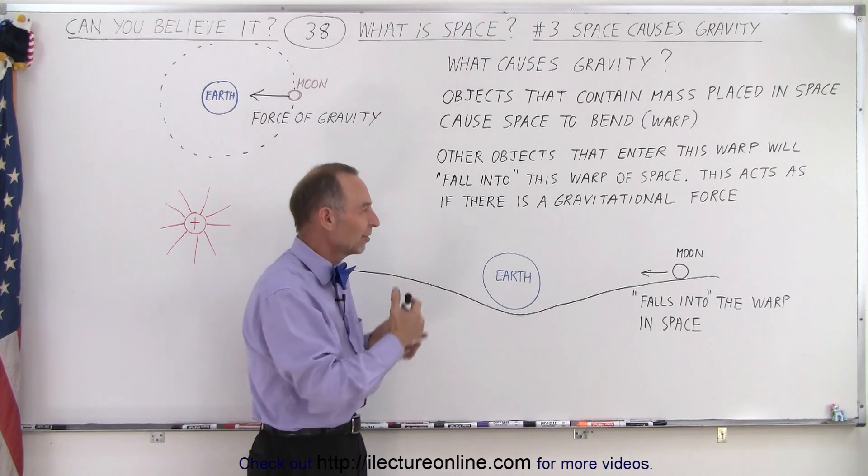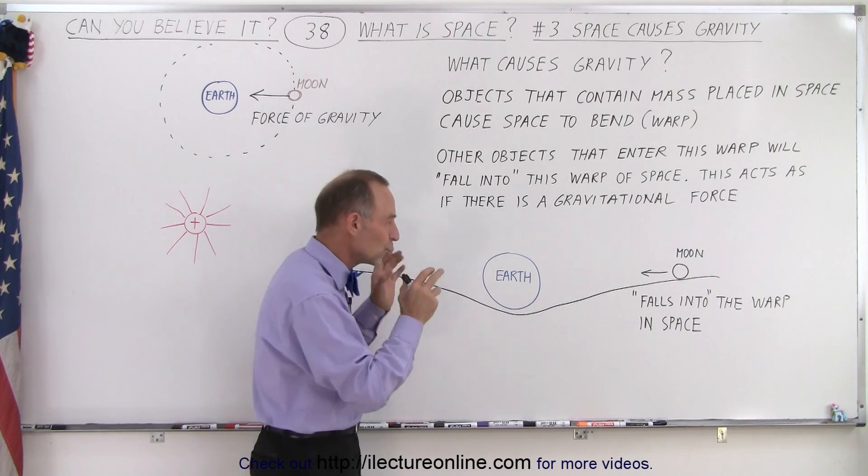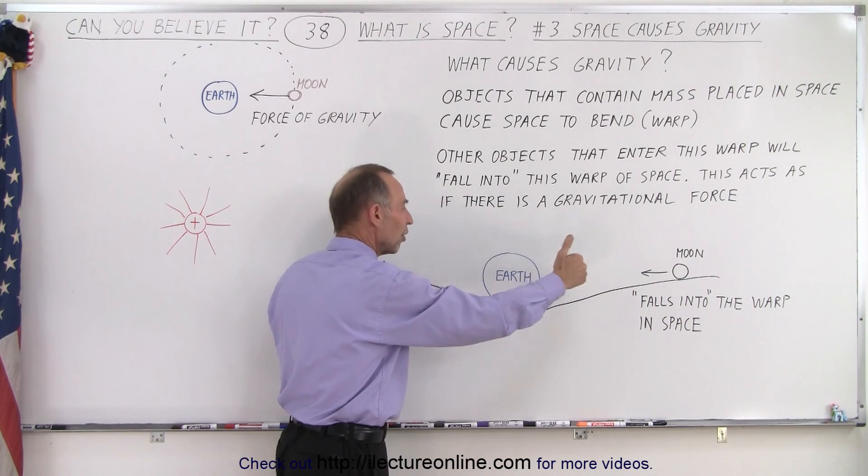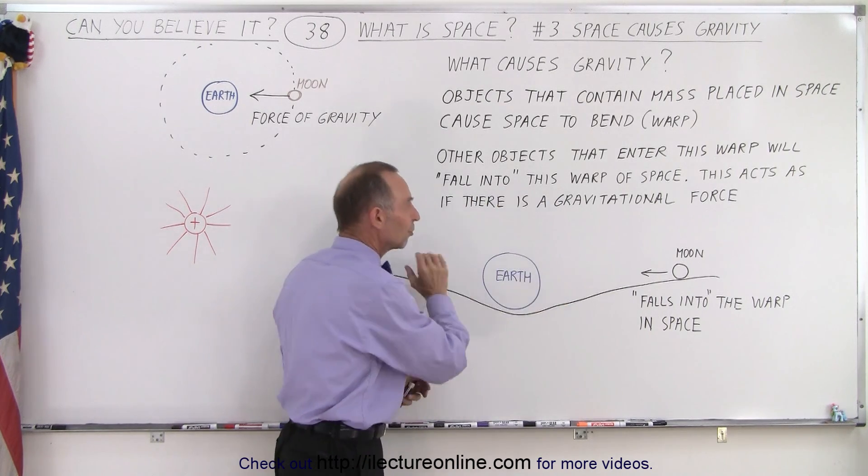It might be warping of space. And then you say, well, warping of space, what does that mean? Well, again, that's what we're trying to discover. What is it really that's going on? What is it about space that causes other objects to fall into a bigger object, because that bigger object does something to the space around it?